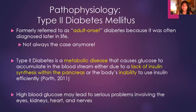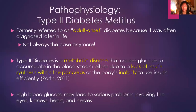Here's the pathophysiology of type 2 diabetes, which is what this drug class helps. Remember, it's not type 1 diabetes because we still need those beta cells to be functional. Type 2 diabetes was formerly referred to as adult-onset diabetes because it was usually diagnosed later in life, but that's not quite the case anymore. There are young adults and children diagnosed with type 2 diabetes due to poor diet, poor exercise, or hereditary factors. Type 2 diabetes is a metabolic disease that causes glucose to accumulate in the bloodstream either due to a lack of insulin synthesis within the pancreas or the body's inability to use insulin efficiently.